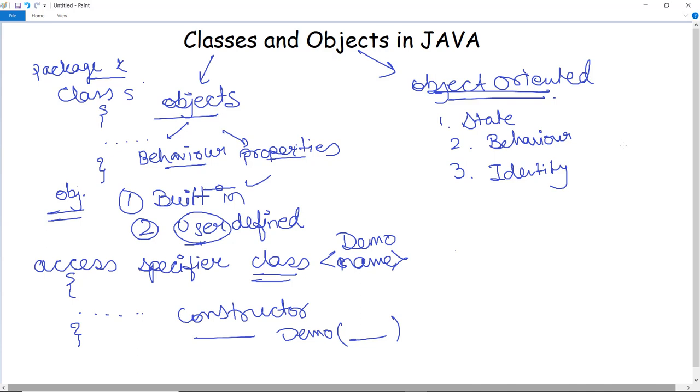Now, how can we create a Java object? We can create a Java object. There are three simple steps. Firstly, what we need to do is we need to firstly declare the object. That is the declaration.